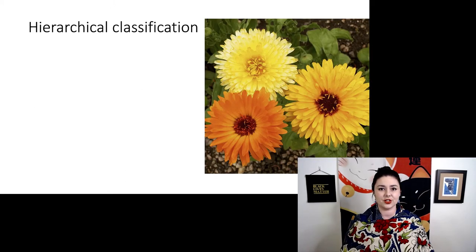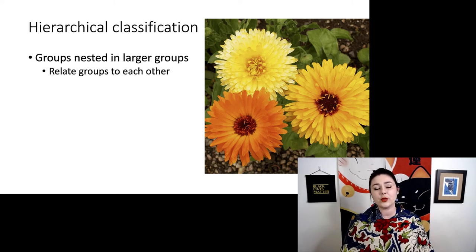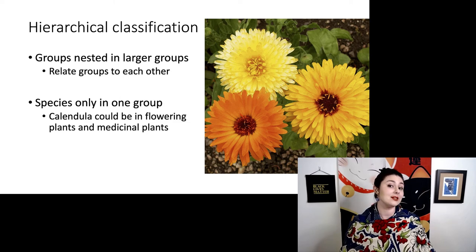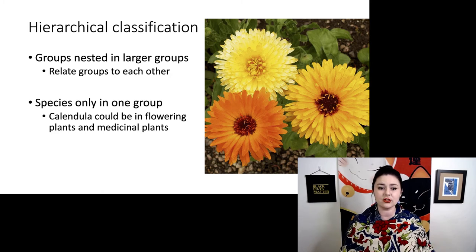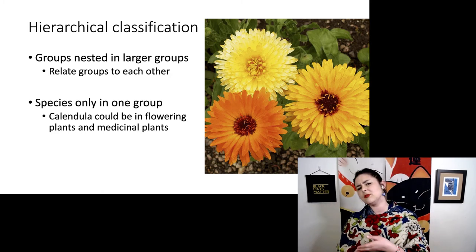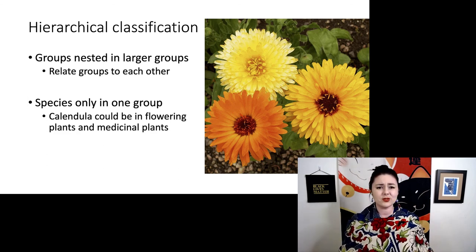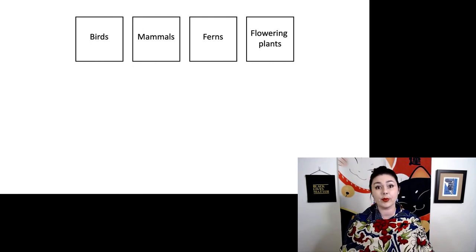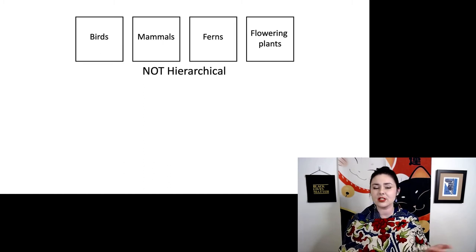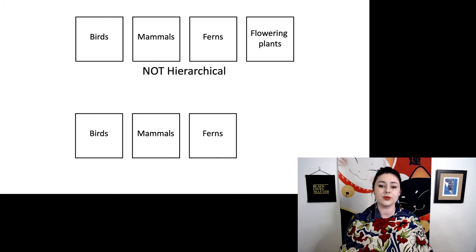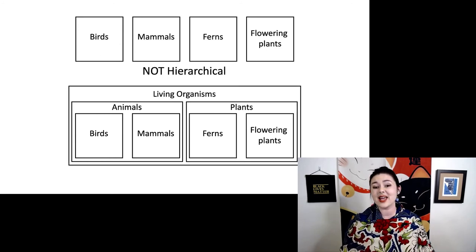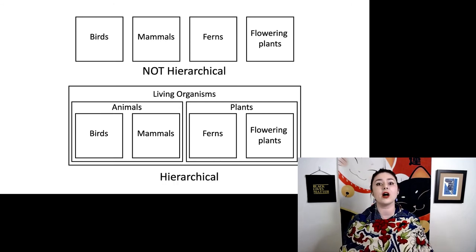The last feature we want to talk about that Linnaeus introduced was the idea of hierarchical classification. We have many groups, but each group is nested in a larger group, and it allows us to relate different things to each other. Also, he's only putting species in a single group. Previously, if we're using different types of classifications, here's a calendula flower — it could be in flowering plants, but it could also be in medicinal plants. Finding things in multiple places just creates confusion and a longer classification system. Here we have four different groups to compare: birds, mammals, ferns, and flowering plants. Without hierarchy, these four groups are not related to each other at all. But if we take these four groups again, we can add information: birds and mammals are both animals, ferns and flowering plants are all plants, and then all of these together are living organisms. This is how hierarchical grouping works, and now we're able to relate these different groups to each other. This is exactly what Linnaeus did.